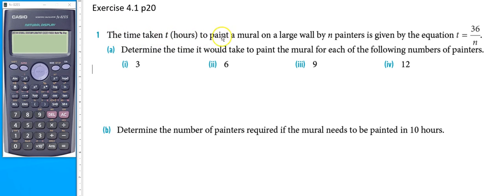The time taken, t hours, to paint a mural on a large wall by n painters is given by the equation t equals 36 divided by n. Determine the time it would take to paint the mural for each of the following numbers of painters.